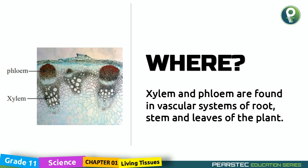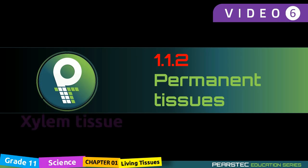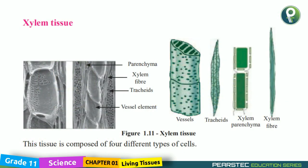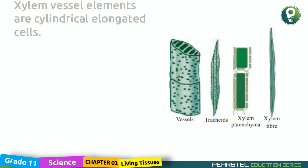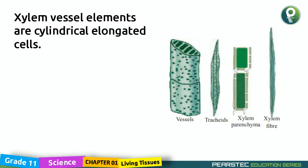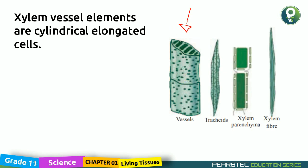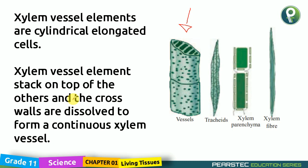Now it's time to dig deeply about xylem tissue. This tissue is composed of four different types of cells: vessels (vessel elements), tracheids, xylem parenchyma, and xylem fibers. Xylem vessel elements are cylindrical elongated cells. Xylem vessel elements stack on top of each other and the cross walls are dissolved to form a continuous xylem vessel.